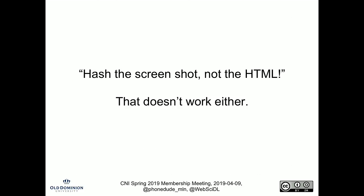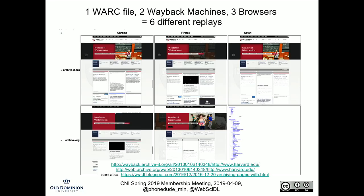You might think: hash the screenshot, not the HTML. That doesn't work either. Here is one archived page — horizontally we have two different Wayback Machines, and vertically we have three different browsers. The takeaway is that even though the same source material never changed, when it's played back and rendered, we get six different answers. Now which one is the right answer? Some are clearly better than others, but it's not entirely clear which one is correct.